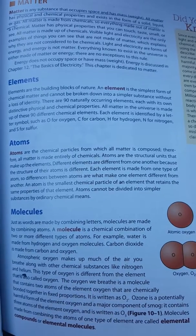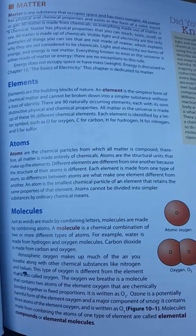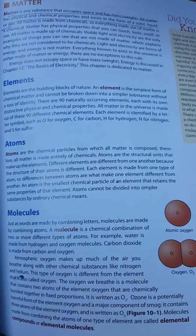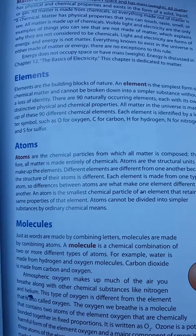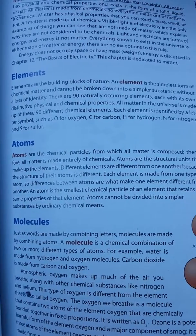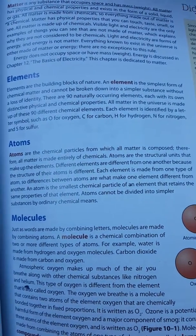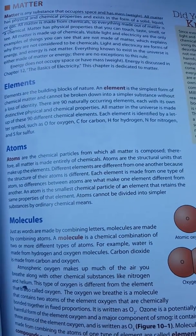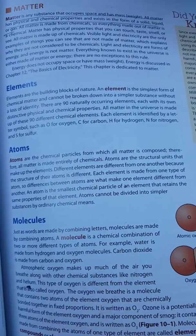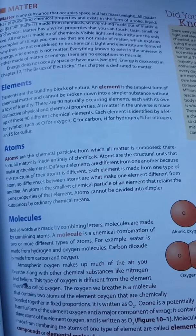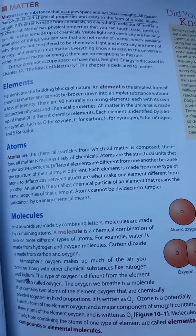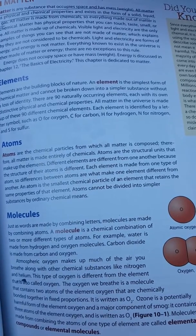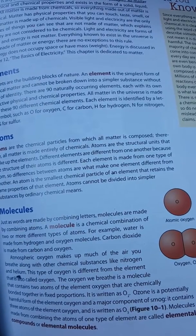Atmospheric oxygen makes up much of the air you breathe along with other chemical substances like nitrogen and helium. This type of oxygen is different from the element that is also called oxygen. The oxygen we breathe is a molecule that contains two atoms of the element oxygen that are chemically bonded together in fixed proportions. It is written as O2. Ozone is a potentially harmful form of the element oxygen and a major component of smog. It contains three atoms of the element oxygen and is written as O3.